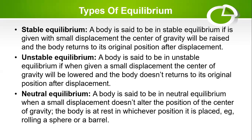When we talk about neutral equilibrium, a body is said to be in neutral equilibrium when a small displacement does not alter the position of the center of gravity, and the body remains at rest in whichever position it is placed. There is no observable effect from any small displacement — it does not alter the center of gravity, so the body remains in whatever position it is placed. An example is a sphere or a bar.